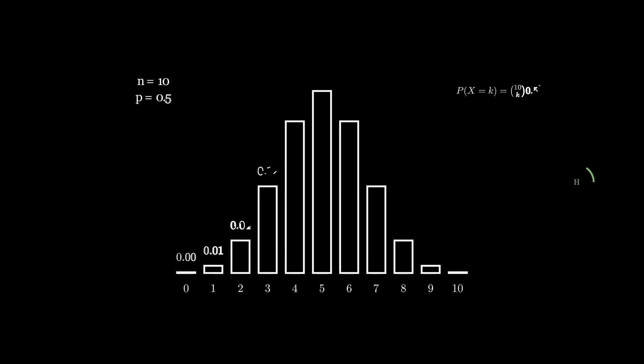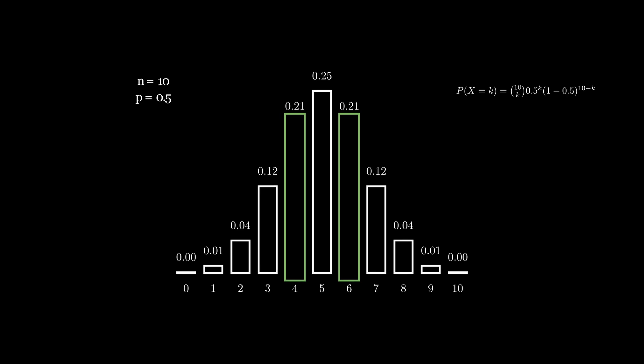If we fix the number of experiments at 10 and consider a fair coin with p = 0.5, we can visualize the probability of getting exactly one, two, three, all the way up to 10 heads by plotting the probability as a function of the success count. You can calculate each value by plugging in p = 0.5, n = 10, and each k value into the binomial formula. A very useful property of the binomial distribution with p = 0.5 is that it is symmetric around n/2. So if you know the probability of k = 4, then you also know the probability of k = 6, and so on.